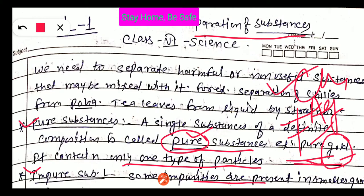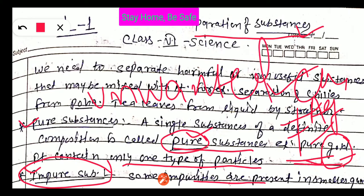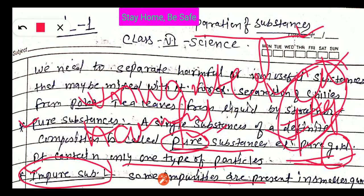So, two types of substances are there: pure substances and impure substances. The need for separation of substances arises when you have impure substances and you have to remove or separate the unwanted or harmful substances. In the case of gold, copper and silver are unwanted substances that should not be mixed with gold. Different techniques are there which we will study one by one.